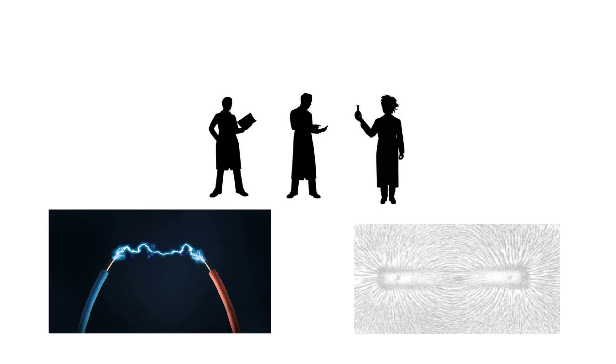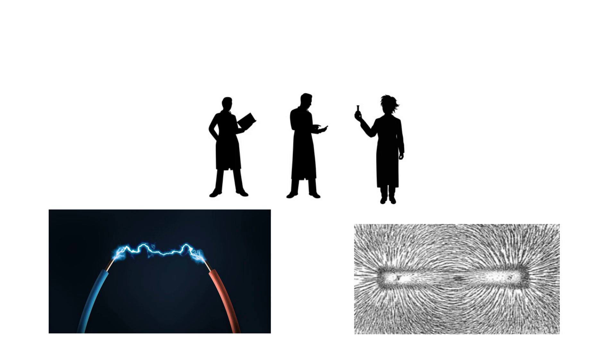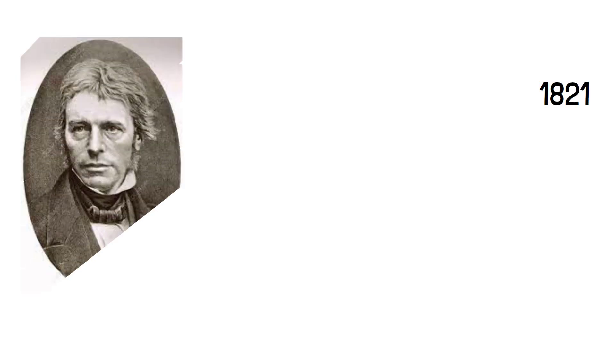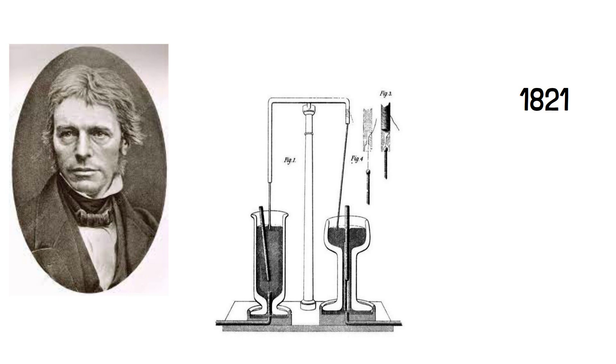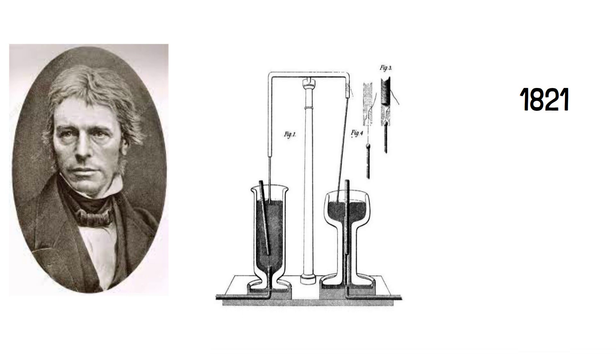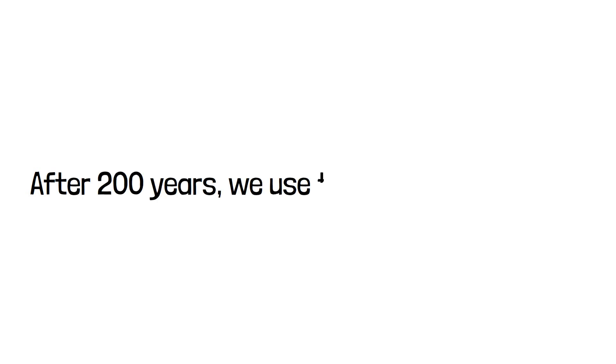Before this invention, scientists didn't have any continuous current source. Almost two decades later, the first breakthrough in the field of electric motors came in 1821, when Michael Faraday demonstrated the first electromagnetic rotation. In the picture you can see the model he used — it used mercury as a conductor for current flow. Clearly this model couldn't be used in any machine, but even after almost 200 years it is still used to demonstrate electromagnetism.